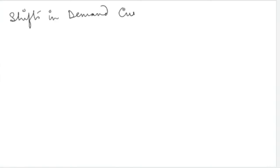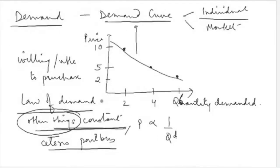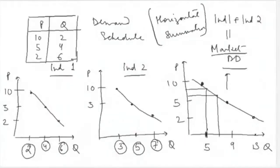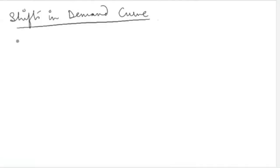Next is Shifts in the Demand Curve. This comes from our definition of law of demand where we said 'other things constant.' Now we are going to relax this assumption and understand what happens when other things are changed. And what exactly are these other things?